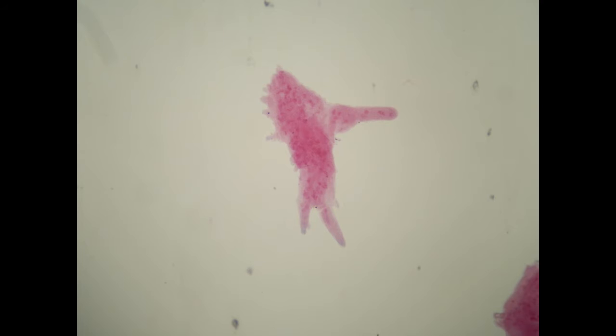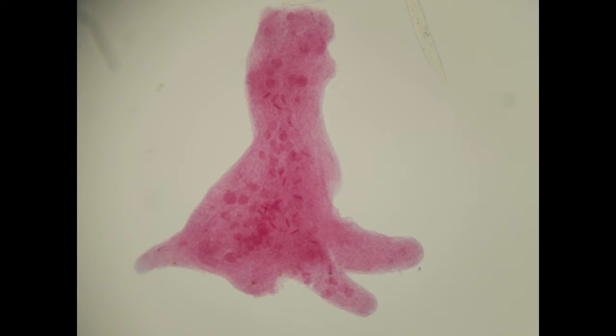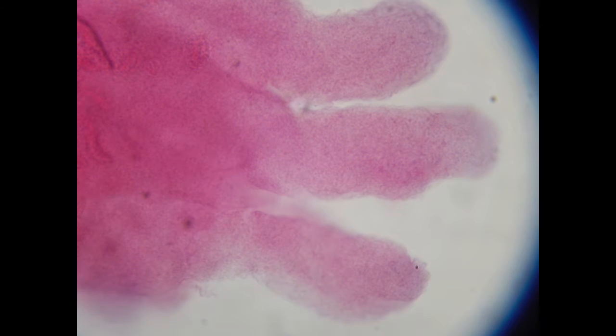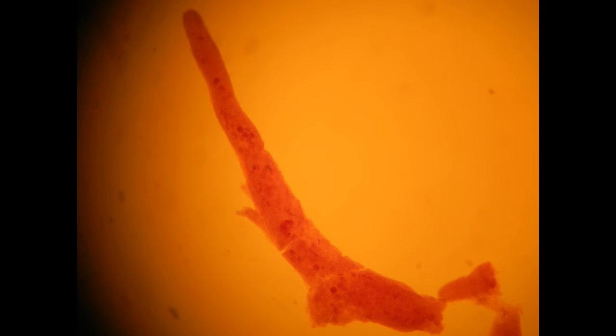While the smallest amoeba measure two or three microns and are about the size of a typical bacterium, some amoeba are truly enormous and can measure a thousand times greater, measuring between one and five millimeters. Even larger forms have been identified from deep marine environments.